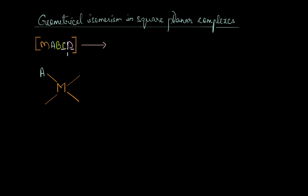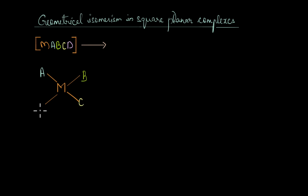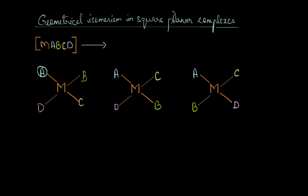What about complexes of the type MABCD, where the metal ion is bonded to 4 different ligands? To determine how many geometrical isomers exist, let's fix ligand A at one position and arrange the other three ligands — B, C, and D — with respect to it. By keeping A fixed and switching the ligands in the adjacent or opposite positions, we are able to get three unique isomers. Any other arrangement obtained by simply rotating the complex will fall back to one of these three arrangements.